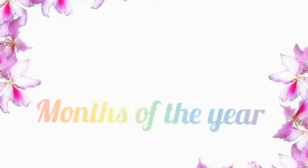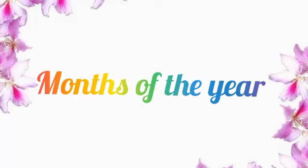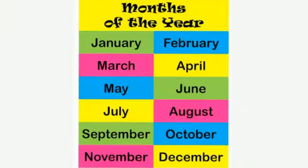Okay, let's learn months in a year. How many months are there in a year? There are 12 months in a year: January, February, March, April, May, June, July, August, September, October, November, and December.